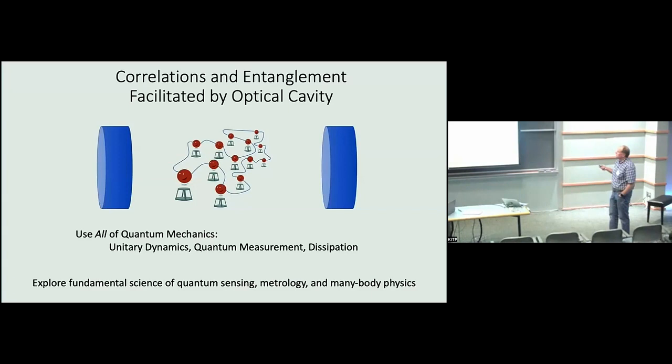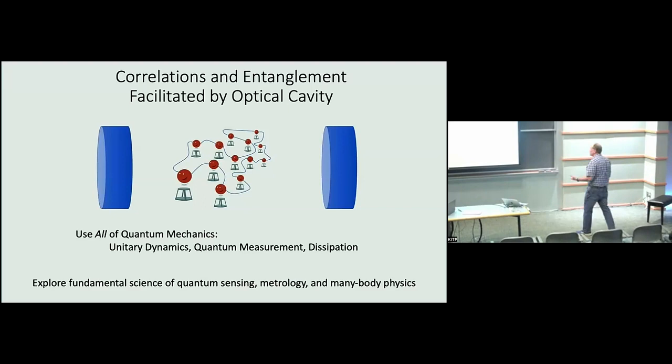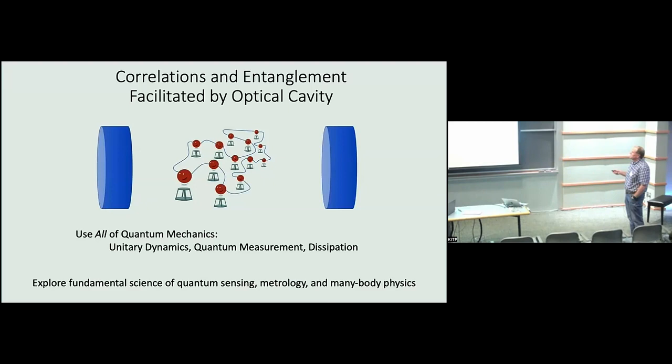All the work I'm going to discuss is related to the idea that we'd like to go beyond single particle physics, where you can control every individual atom and make them do what you want. We actually want to connect them — not just do N copies of an experiment, but have correlations or entanglement between atoms so they do something better than independent atoms. The way we'll create those correlations and entanglement is via an optical cavity.